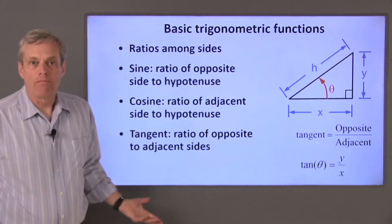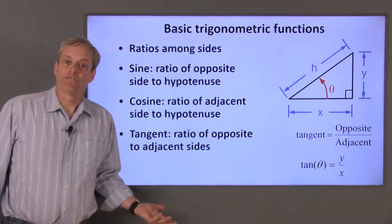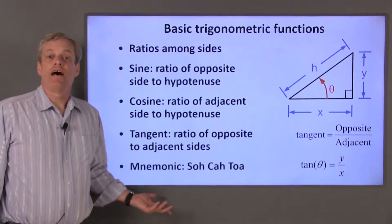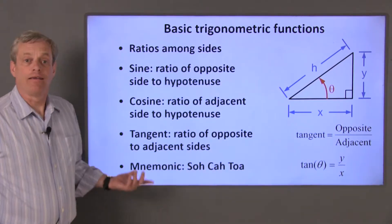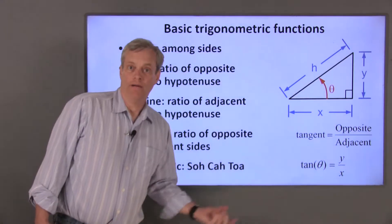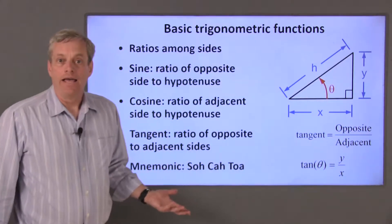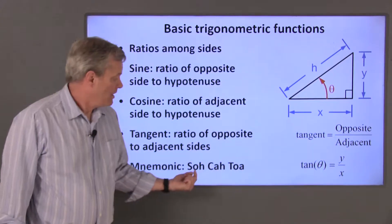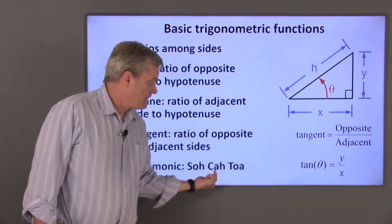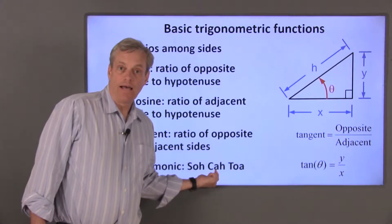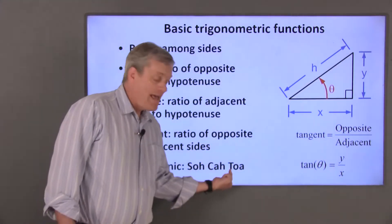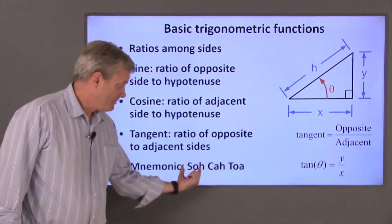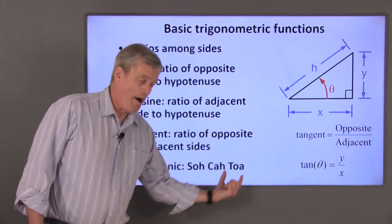If you have trouble remembering the definitions of sine, cosine, and tangent, there's a fairly common mnemonic: SOHCAHTOA. The sine is the opposite side over the hypotenuse. The cosine is the adjacent side over the hypotenuse. And the tangent is the opposite side over the adjacent. SOHCAHTOA.